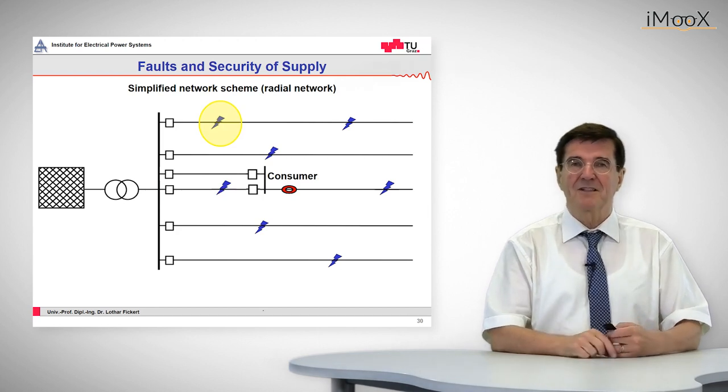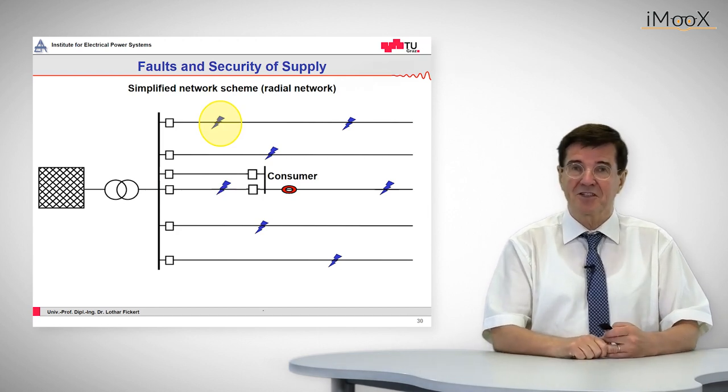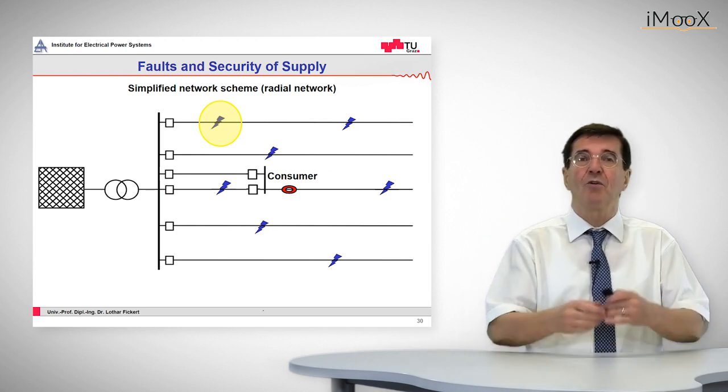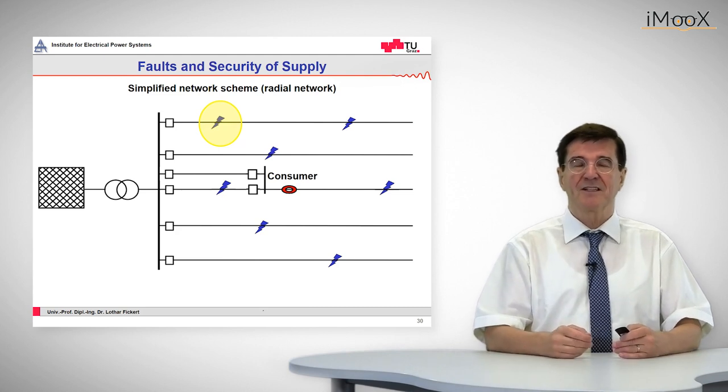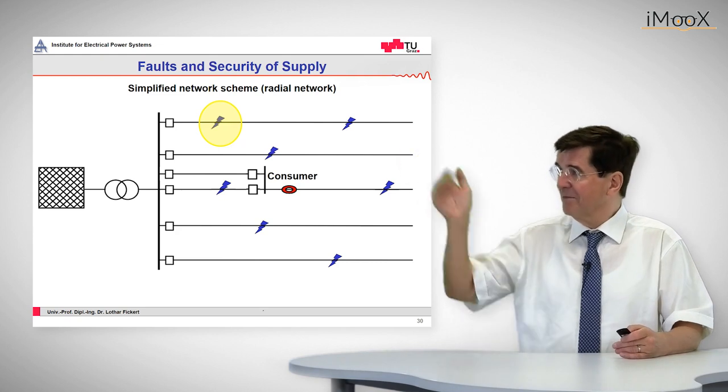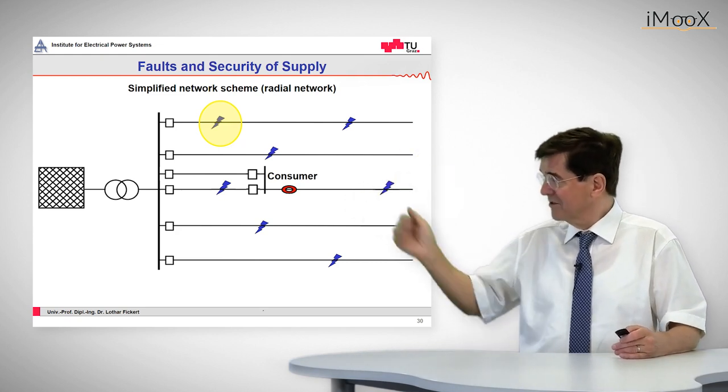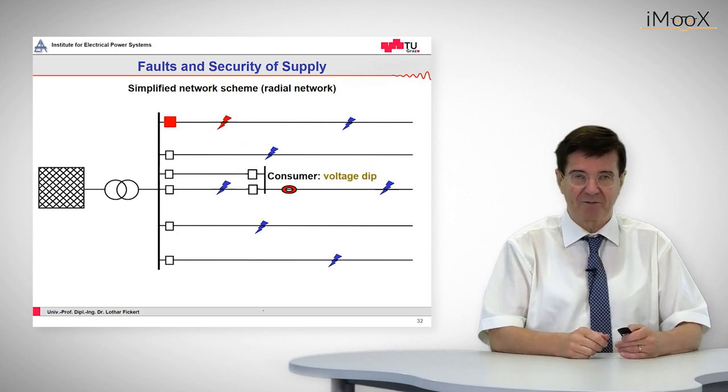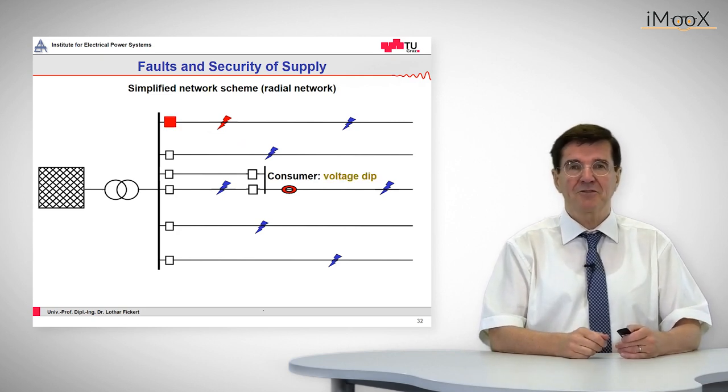The last point that deserves attention concerning the relation between protection and power quality is all the faults that are outside of this consumer's feeder, for example in this yellow circle. If a fault occurs here, this fault will be detected by the feeder protection and will be tripped out.